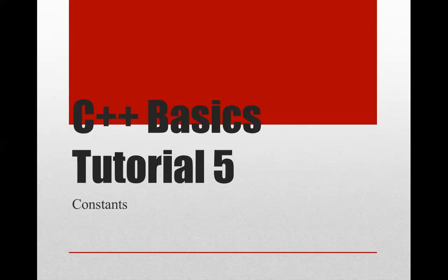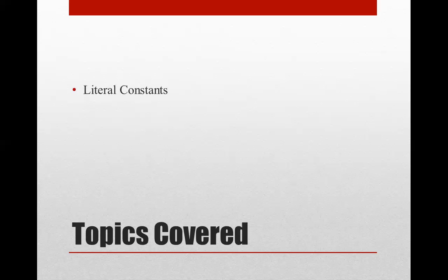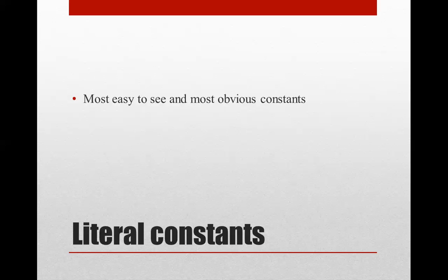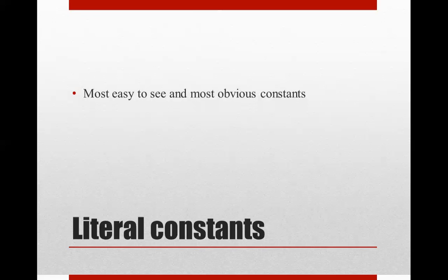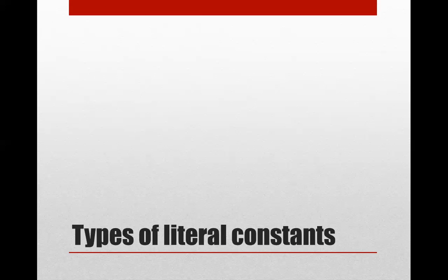Today we're going to talk about three types of constants: literal, defined, and declared constants in C++. These are the three types of constants we have. Literal constants are the most easy to see and most obvious constants of all — when you see them, you know from common sense that they are constants.